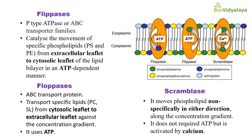Next is scramblase. Scramblase helps in the transport of lipids from the outer leaflet to the inner leaflet and from the inner leaflet to the outer leaflet — that means in both directions — in a non-specific manner. It moves phospholipids non-specifically in either direction along the concentration gradient, meaning from higher concentration to lower concentration. That is why it does not require ATP, but it is activated by calcium. So scramblase needs calcium but does not require ATP.